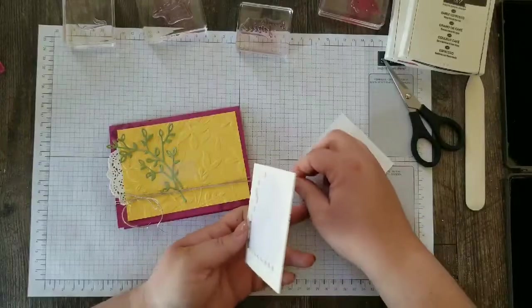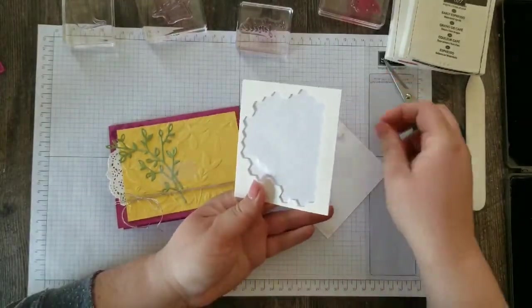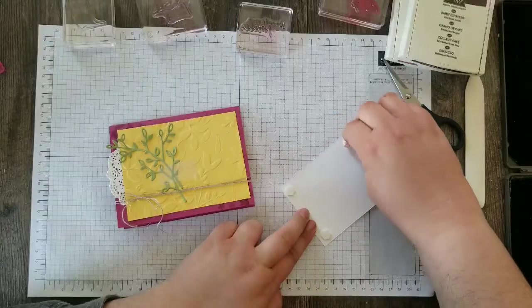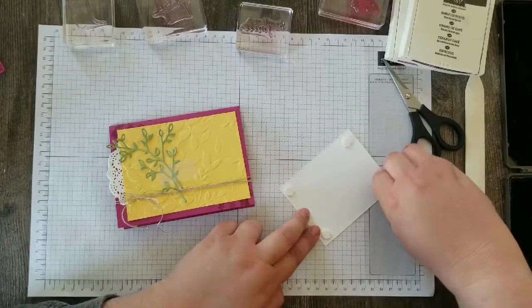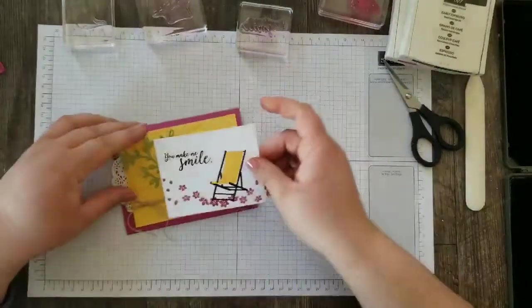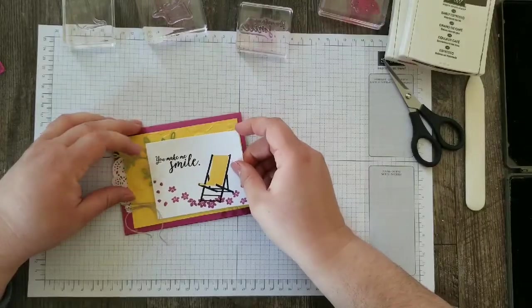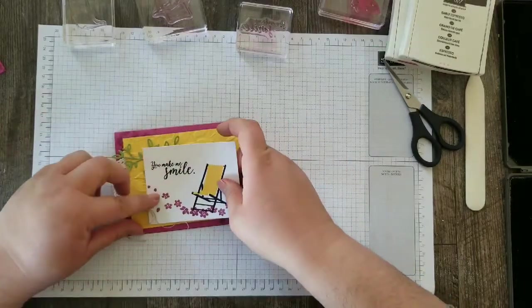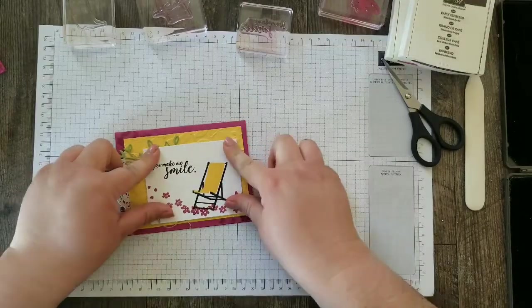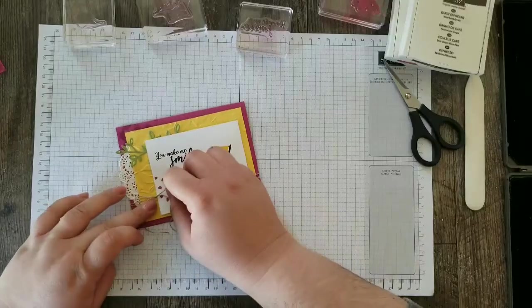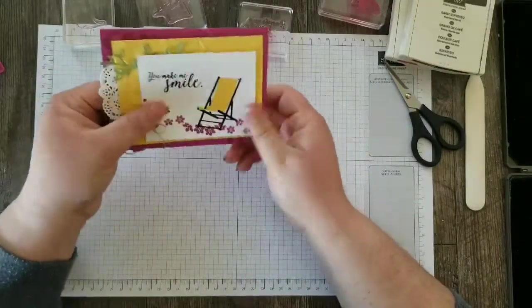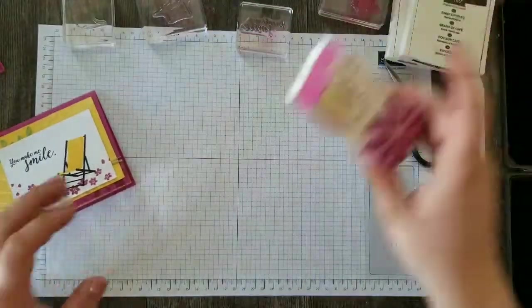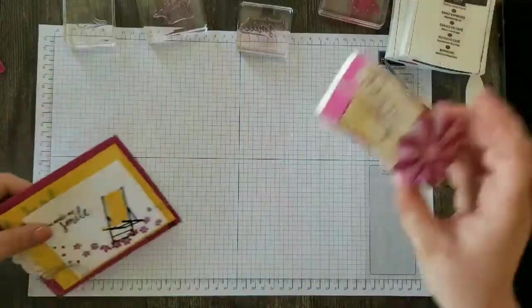So now come in with my dimensionals here. And we'll line that up. And secure. There we go. So our card is finished and we've got the inside done. Now I'm going to show you how I made the box to go with the card. These coordinate really well together.